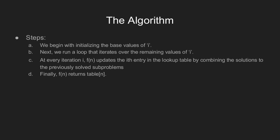Let's understand the algorithm now. First, we enter the base value of i in the lookup table. Then we run a loop that iterates over the remaining values of i. At every iteration i, we update the ith entry in the lookup table by using the solutions to the previously solved sub-problems.